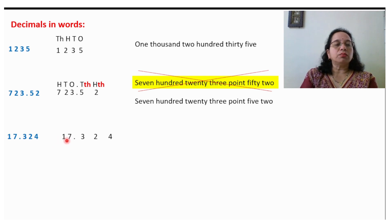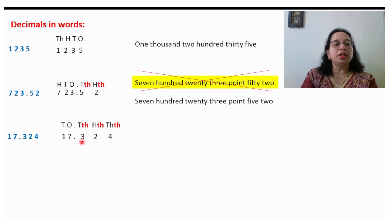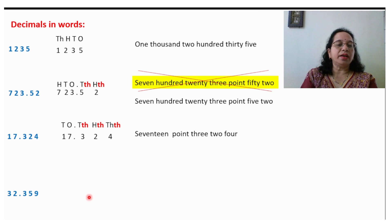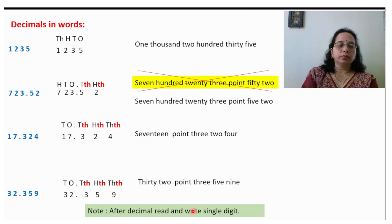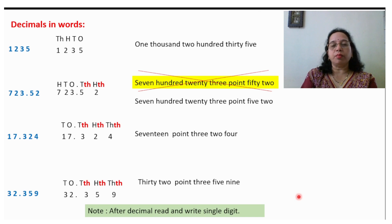Again write down the number, above the digits write down the places. How do we read 17.324? Take one more example: 32.359. After the decimal, read and write single digit — this is a very very important concept of reading and writing decimals.